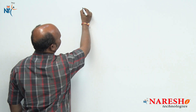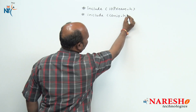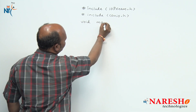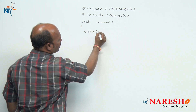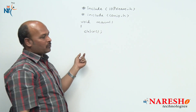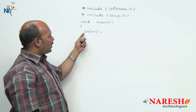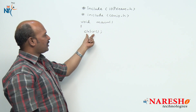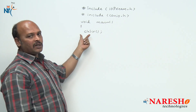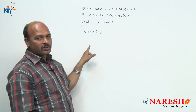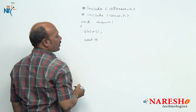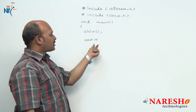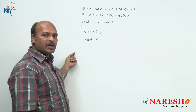Now I am going to give one small example on Cout. First, the header file — hash include conio.h. Then void main, and here I am going to start with CLRSCR first because I want to clear the contents of the console window. CLRSCR is a predefined function available in conio.h, that is why I have included conio.h. Now I am going to write Cout — whenever you work with Cout, you should use the insertion operator, which is '<<'.